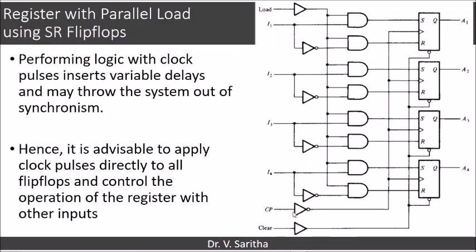So what we do here is the clock pulse will be directly given to the flip-flops, but explicitly a load input will also be there. A buffer will be used for power saving. When load equals 1, one input of all the AND gates will become 1. The first AND gate connected to the S input will have I1 directly, and a NOT gate connection will be given to the AND gate connected to the R input. When load is equal to 0, S and R will both be 0, so the resistor value will not be changing.